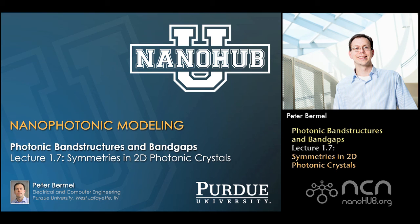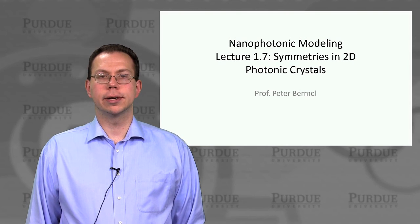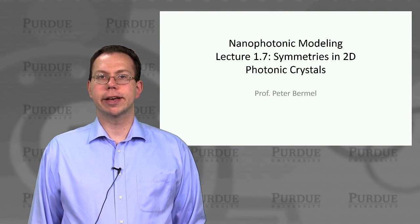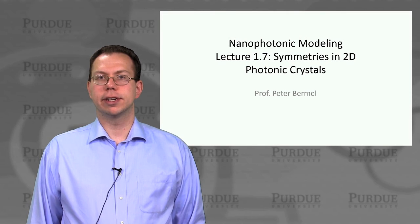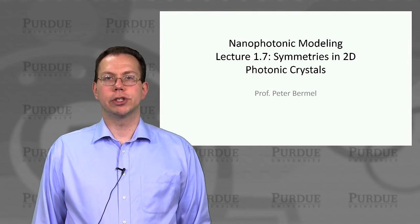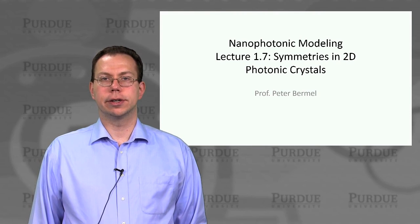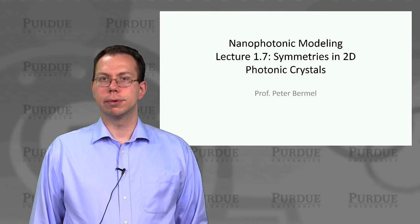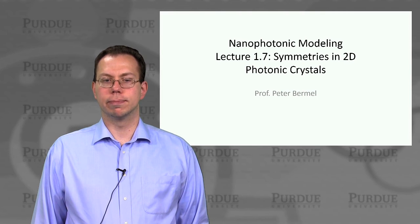Nanohub U, online instruction. Hey everyone, welcome to lecture 1-7. Continuing on the topic of 2D photonic crystals, we're going to talk about the symmetries that allow us to go from a Brillouin zone to an irreducible Brillouin zone, and thus simplify the kind of calculations we have to perform.